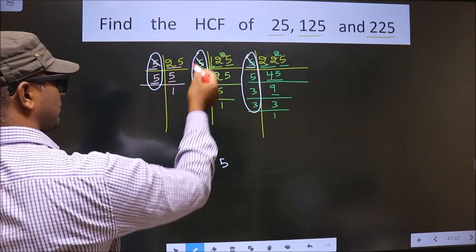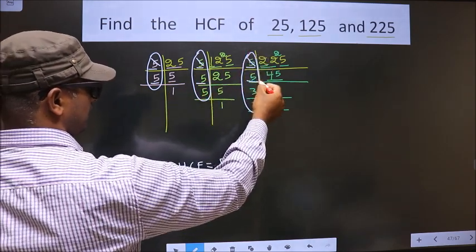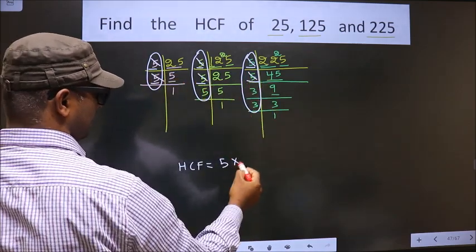Next number is 5. Do we have 5 here? Yes. So next place. Do we have 5 here? Yes. So you cut 5 right here.